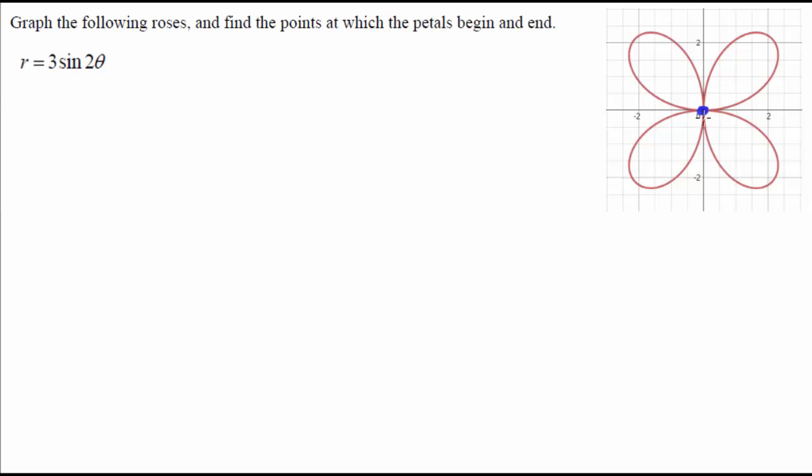So when we're looking for where the petals begin and end, we'll always do one more point than however many petals we have because we have to have a beginning and ending point for each, but for most of our petals, those overlap, except for our first and our last one.